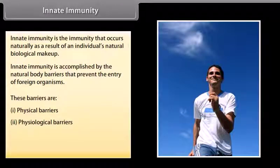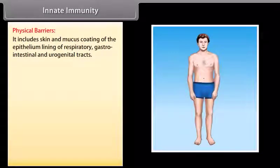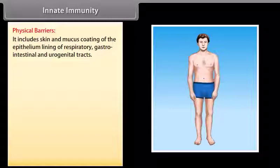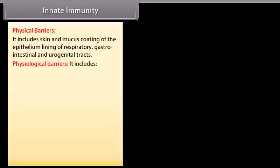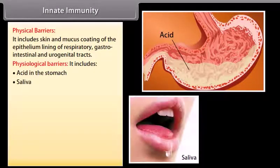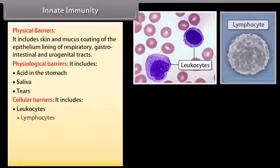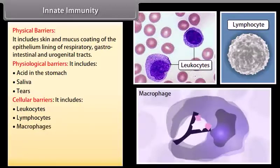Physical barriers include skin and mucus coating of the epithelium lining of the respiratory, gastrointestinal, and urogenital tracts. Physiological barriers include acid in the stomach, saliva, and tears. Cellular barriers include leukocytes, lymphocytes, and macrophages.